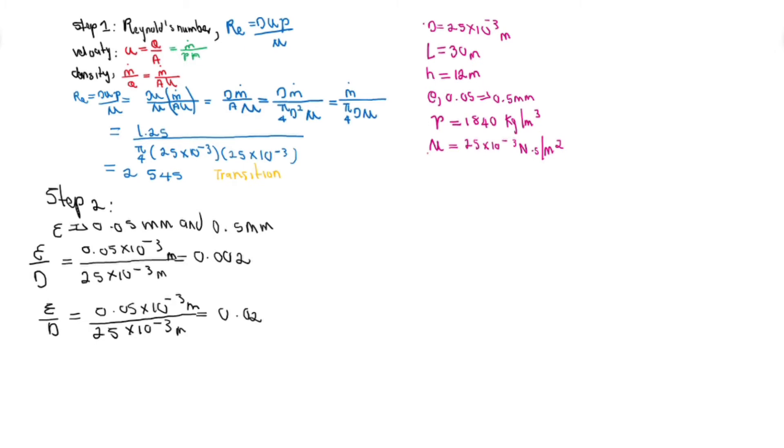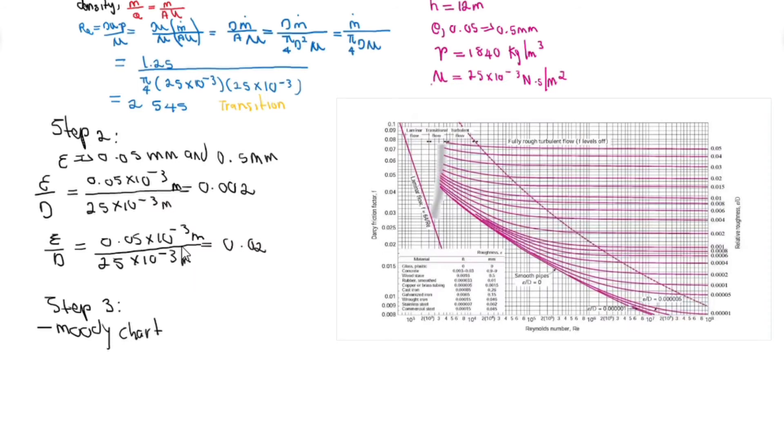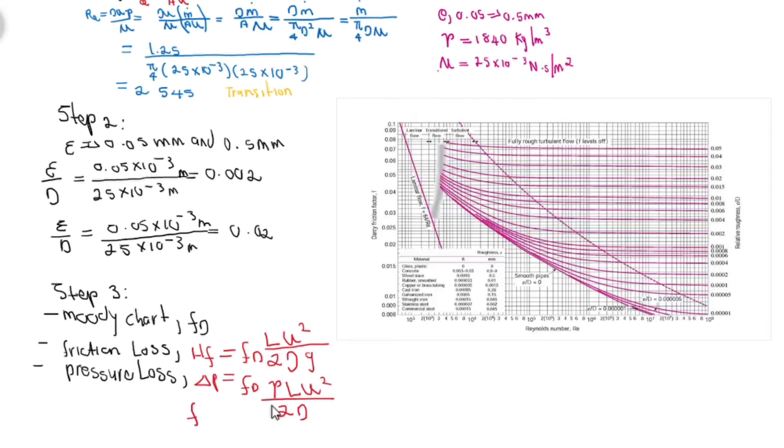Step 3 will be to calculate the friction factor. We have the Moody chart. Friction that you extract from the Moody chart, I am going to use FD to represent it. Remember, different textbooks have different notations. To calculate the friction loss from the Moody chart, you would say FD times length times velocity squared divided by 2 times diameter and gravitational force. To calculate the pressure loss, whereby in this scenario the laminar friction can be calculated as 64 over Reynolds number.